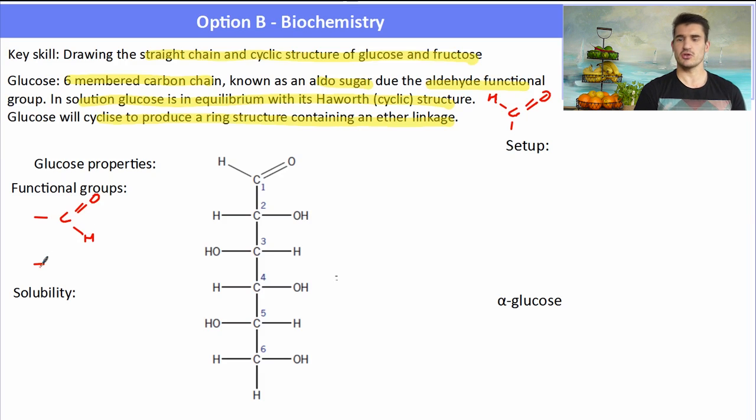So some of the properties of glucose, well it contains an aldehyde functional group and it also contains a number of OH groups. It's highly soluble because of the large degree of hydrogen bonding that can occur between it and water. Now if we want to draw the Haworth structure or the Haworth representation, then the two important parts are the first carbon with the aldehyde group and the fifth carbon. This is where the molecule will create a ring and it will be linked by an ether link.